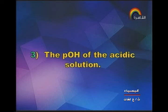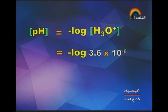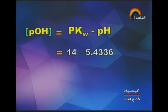Third point — the pOH of the acidic solution: pOH = −log[H₃O⁺] = −log(3.6×10⁻⁶) = 5.4336. Then pOH = pKw − pH = 14 − 5.4336 = 8.5563.